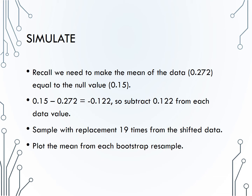To simulate these data, remember that we need to make the mean of the data — which was 0.272 — equal to the null value of 0.15. Taking the null value minus the mean, we get a value of negative 0.122. In other words, we need to subtract 0.122 from each arsenic concentration in order to make the mean of the shifted data equal to the null value. Then we will use bootstrapping, or sampling with replacement, 19 times from this shifted dataset, and plot the mean of each bootstrap resample to create our simulated null distribution.